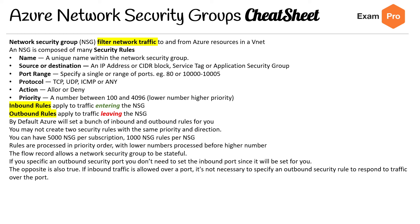What couldn't fit in this cheat sheet was the scenario where you have multiple NSGs — based on whether they're on the NIC, the virtual machine, etc. There are graphics for that in the slides, so make sure you review those before you sit your exam.